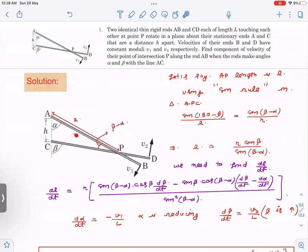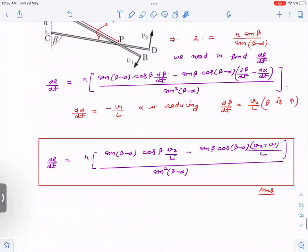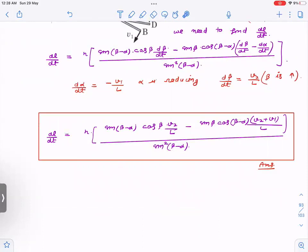Alpha is decreasing, so if alpha is decreasing, d(alpha) by dt is going to be negative, so that is minus v1 by L. These two values of d(alpha) by dt and d(beta) by dt we can substitute here and that is how we get the answer. It looks complicated but actually it is a simple question and it is very important for JEE Advanced.